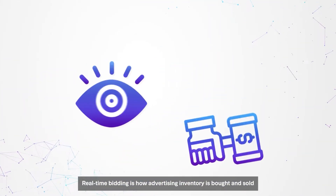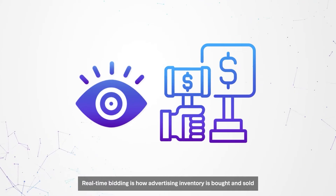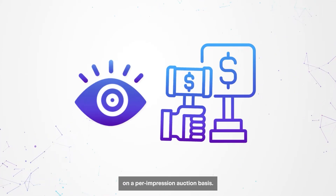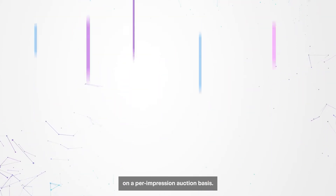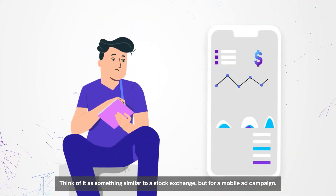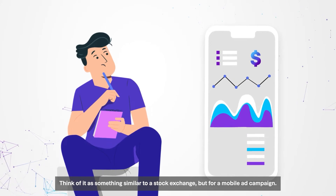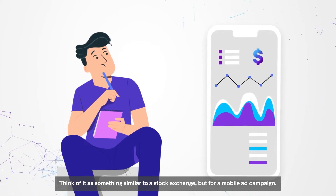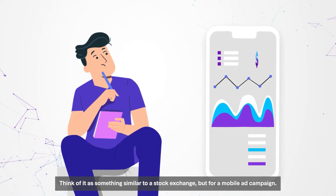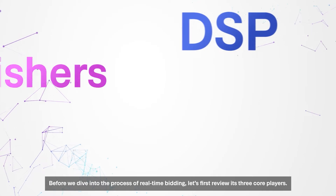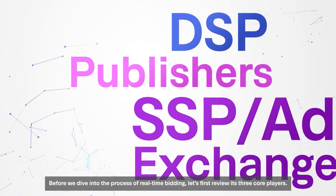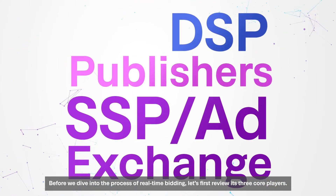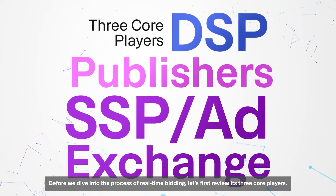Real-time bidding is how advertising inventory is bought and sold on a per-impression auction basis. Think of it as something similar to a stock exchange, but for a mobile ad campaign. Before we dive into the process of real-time bidding, let's first review its three core players.